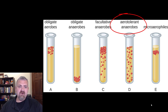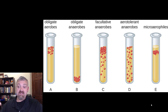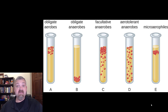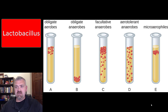Next we have the aerotolerant anaerobes. The name is very helpful here — it tolerates oxygen, but it's an anaerobe, meaning without air, without oxygen. So it does not use oxygen, but it can tolerate its presence. Notice the test tube: it grows evenly throughout because it's not using oxygen. If some is there, it can deal with it and neutralize it; if there's none, it doesn't matter because it doesn't need it. Aerotolerant anaerobes don't use oxygen but can grow in its presence. The best example would be Lactobacillus — found in your yogurt and probiotics — the lactic acid-producing organisms are aerotolerant anaerobes.